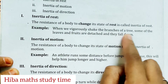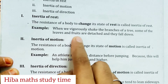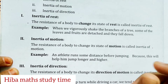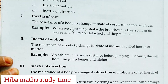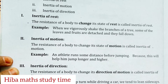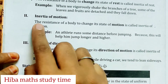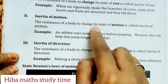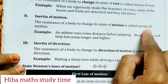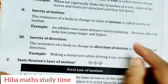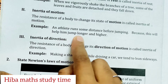Example for inertia of rest: when we vigorously shake the branches of a tree, some of the leaves and fruits are detached and they fall down. The resistance to change of rest is called inertia of rest. The resistance of a body to change its state of motion is called inertia of motion. An athlete runs some distance before jumping because this will help him jump longer and higher.